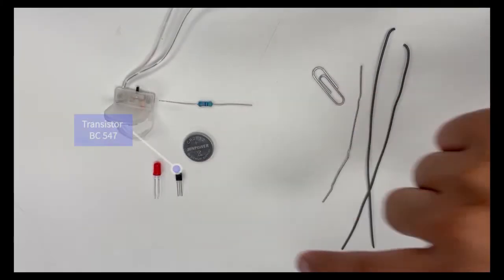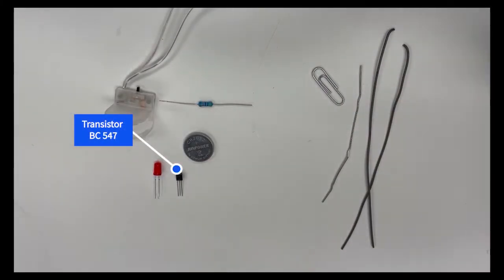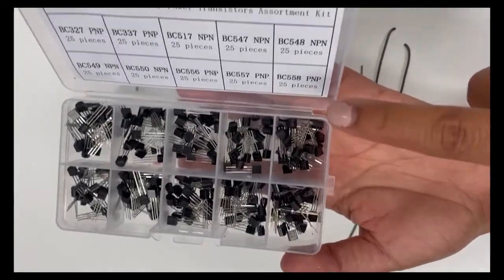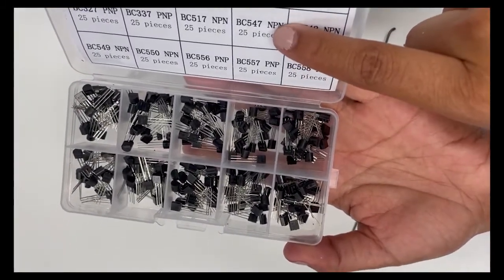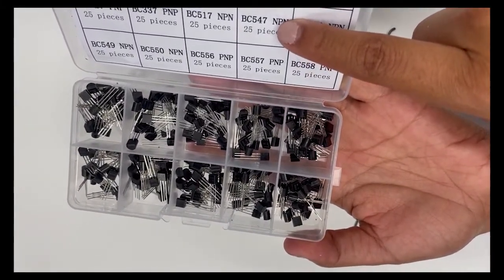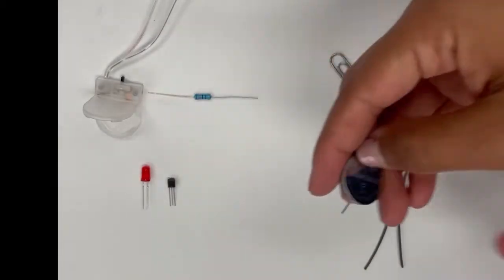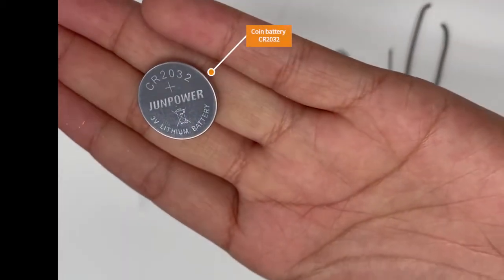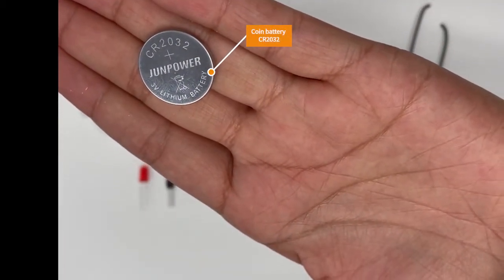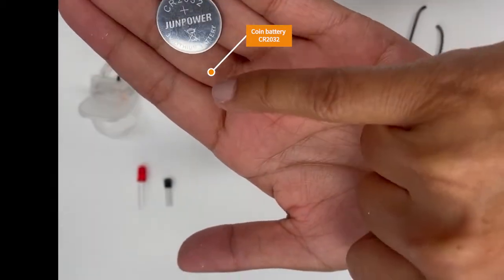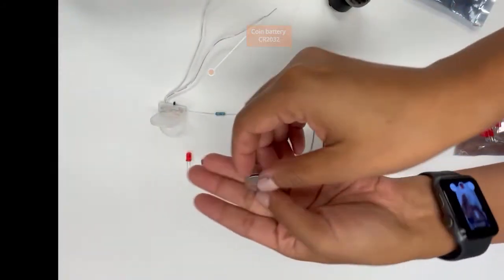We have a transistor. The transistor we are using is the BC547 transistor. We are also using a coin battery. In this case, we have the CR2032 battery. The name is over here and it's a 3-volt battery.